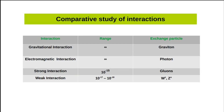Now coming to a comparative study of these interactions. We have columns for the interaction, range, and exchange particles. Range means up to what extent this interaction can be felt. Exchange particles are what particles exchange between them when interacting via strong, weak, or electromagnetic interaction — each interaction has different exchange particles.